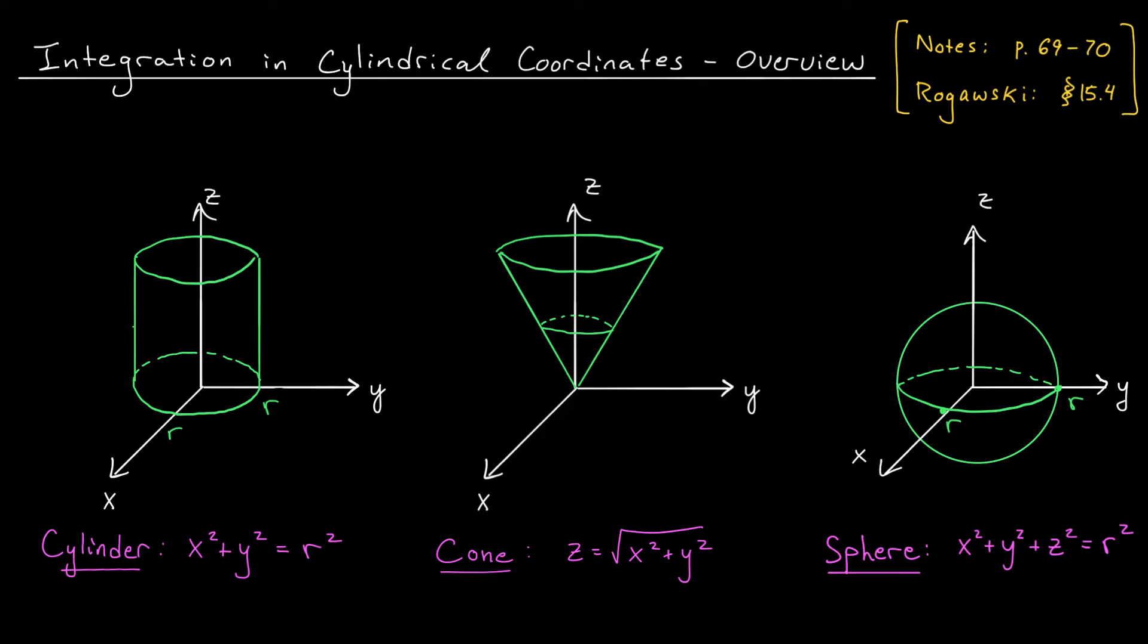Perhaps not surprisingly, if we're trying to compute a triple integral throughout a 3D solid with circular symmetry, it might be difficult to do this if we limit ourselves to just Cartesian coordinates. For example, if we're trying to integrate throughout a cylinder, throughout a cone, or throughout a sphere, you can see that in each case we have a circular component that we're going to have to deal with.